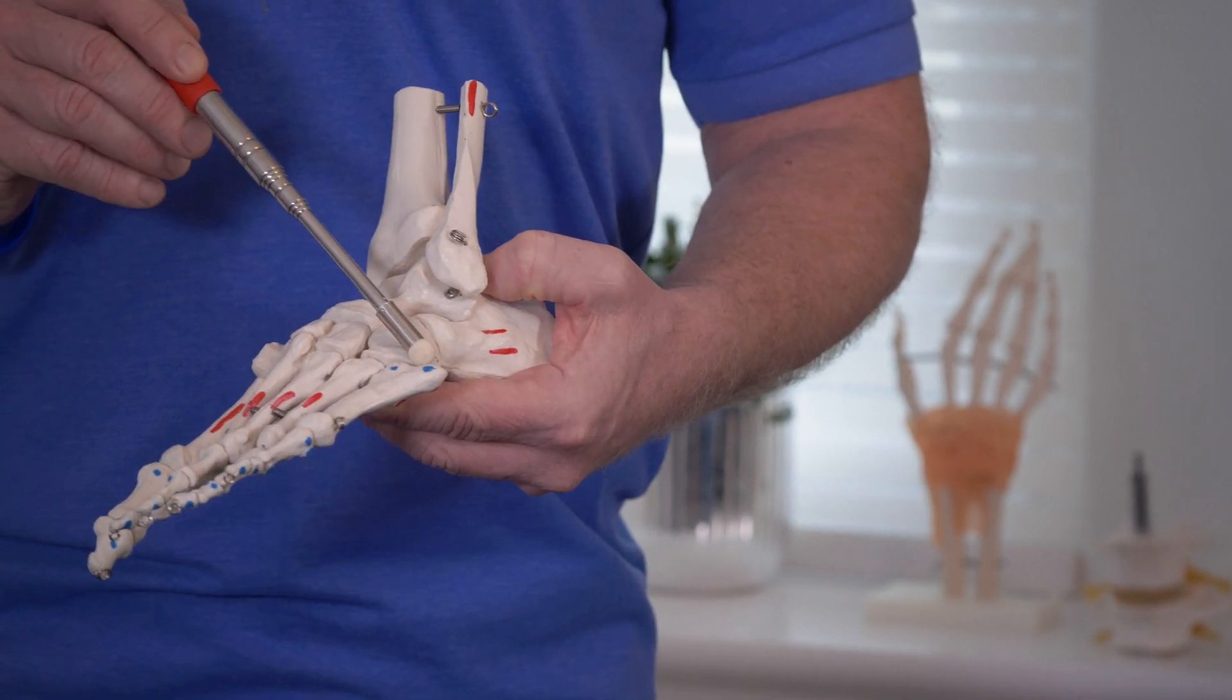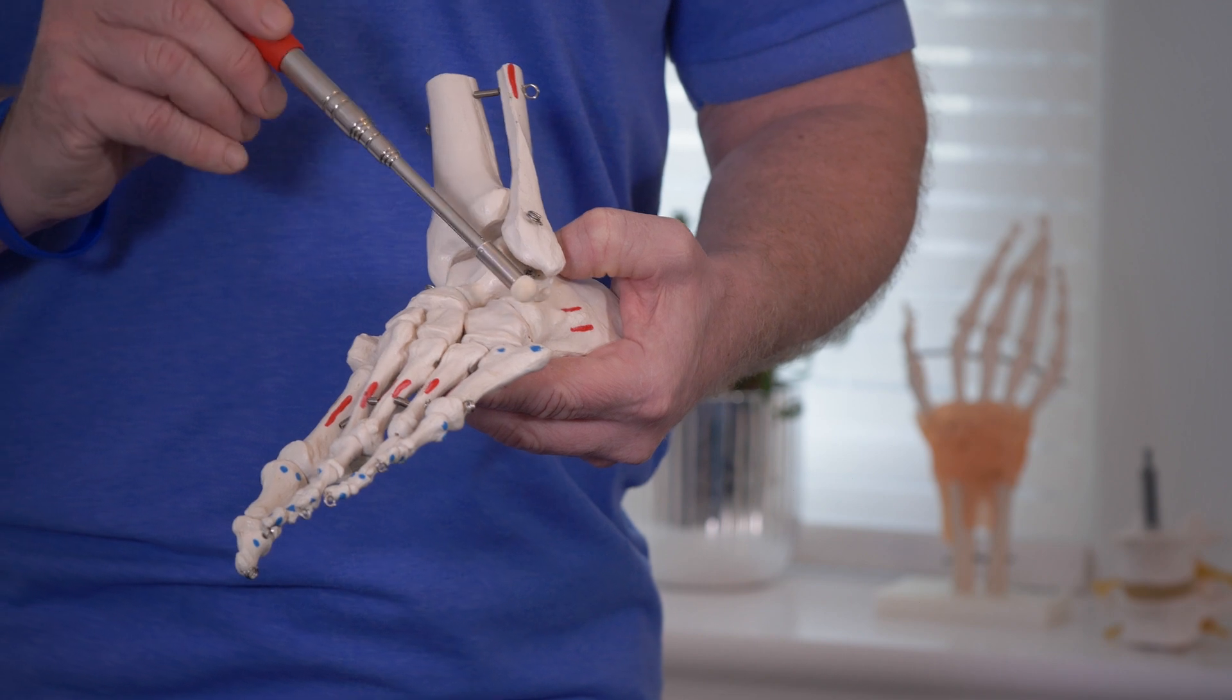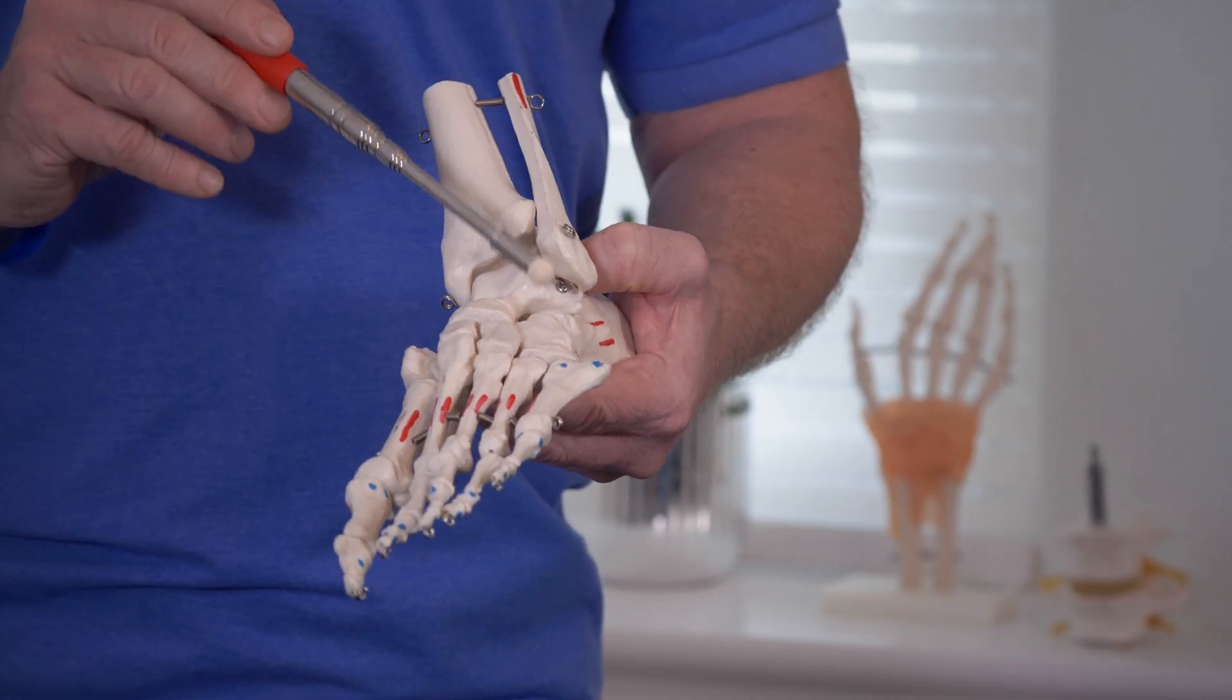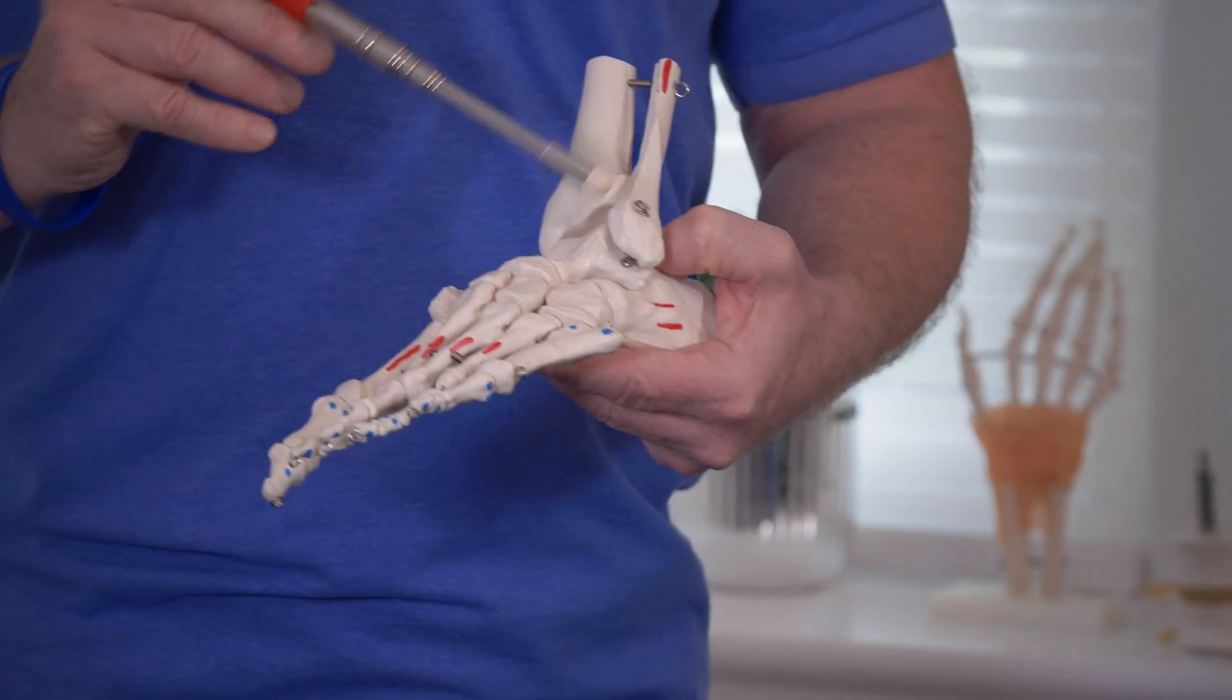Quite commonly you can have what we call an avulsion fracture, where part of the bone pulls away because of its tendon attachment, or the tendon itself can actually just pull away. Sometimes you can go over on an ankle and damage it there.